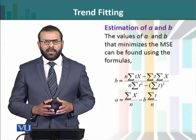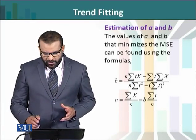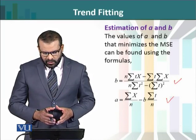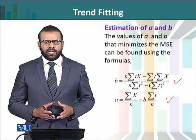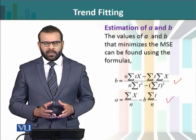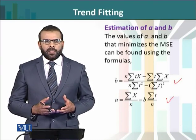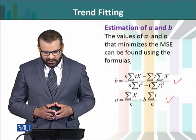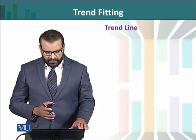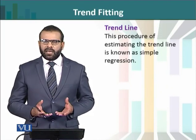a اور b کو estimate کرنے کے لیے mean square error کو minimize کرتے ہیں۔ اس minimization سے جو expressions آئیں گے وہ ہمارے سامنے screen پہ موجود ہیں، جن کی مدد سے b اور a کو observed data کی بنیاد پر calculate کیا جا سکتا ہے۔ اس میں x وہ time series observations ہیں جو record ہوئی ہیں، اور t ایک time variable ہے جسے ہم خود arbitrarily choose کر سکتے ہیں۔ ان دو variables کو use کرتے ہوئے a اور b کی values estimate کی جاتی ہیں۔